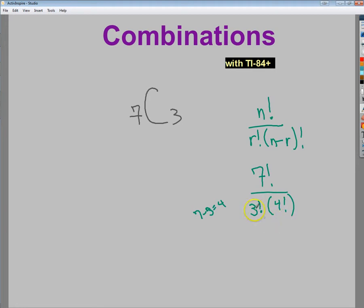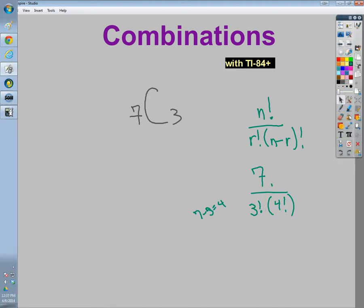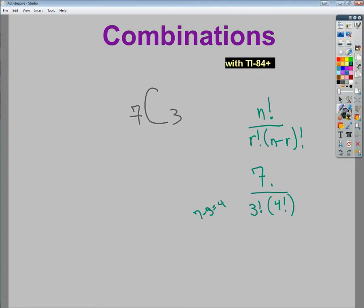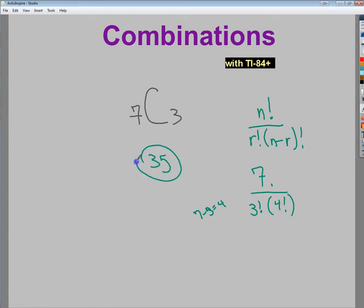the easiest way to do this one is just to go into the math menu here. First, you want to put your total number in before you do anything else, so seven. Then go to your math menu. There should be a PRB thing, that's probability. Go down to combinations. You type in your little subset, your r value, and you hit enter. And it says that total combinations of three items out of seven, there are 35 total possibilities. It's pretty simple to get that part right.